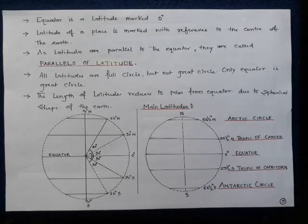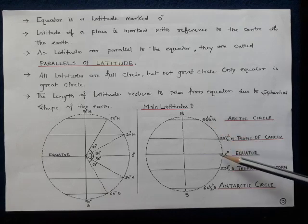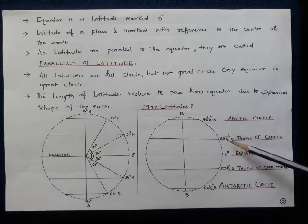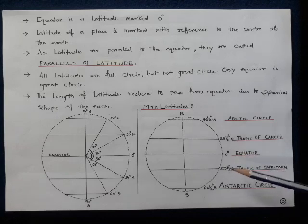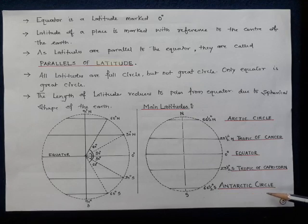There are some important or main latitudes: the Arctic Circle, Tropic of Cancer, Equator, Tropic of Capricorn, and Antarctic Circle. The Arctic Circle is at 66.5° north of the equator. The Tropic of Cancer is at 23.5° north of the equator. The Tropic of Capricorn is at 23.5° south, and the Antarctic Circle is at 66.5° south.